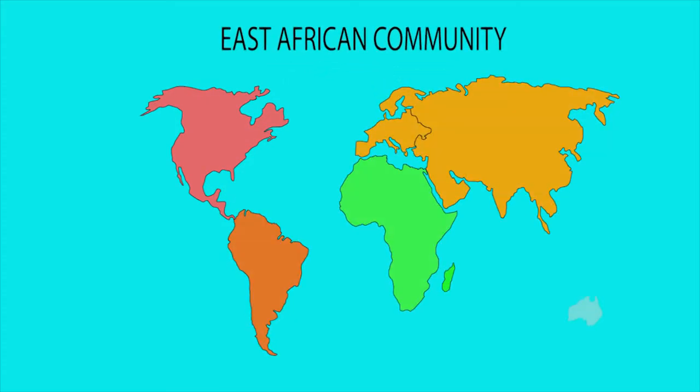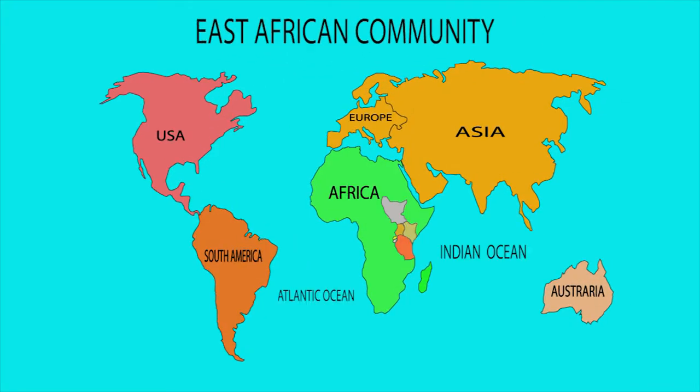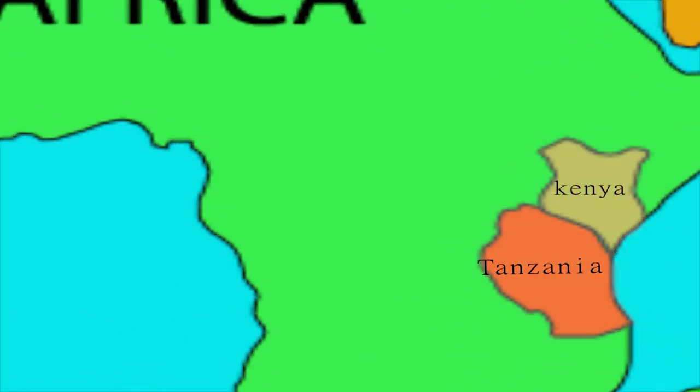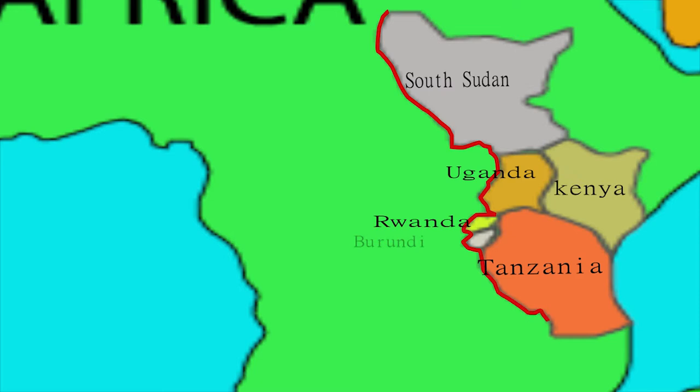The East African community is a common market combining six countries: Kenya, Tanzania, Uganda, South Sudan, Rwanda, and Burundi.